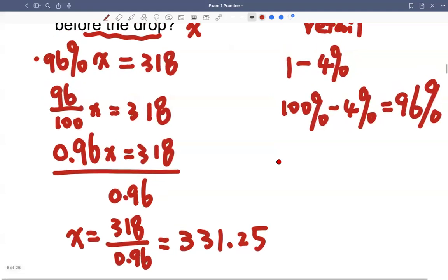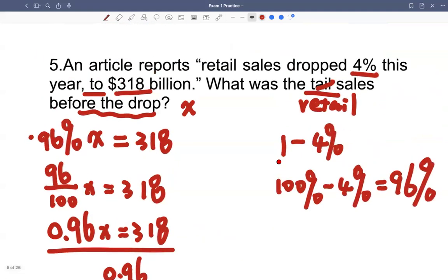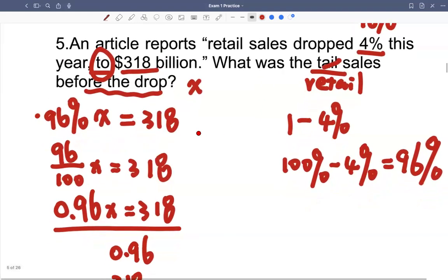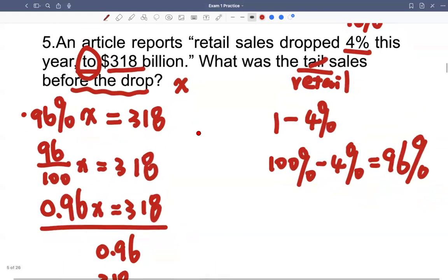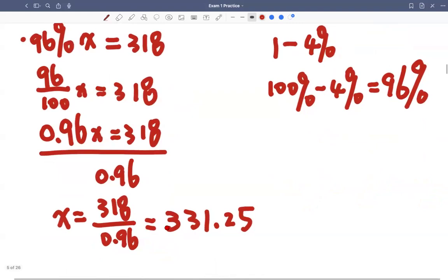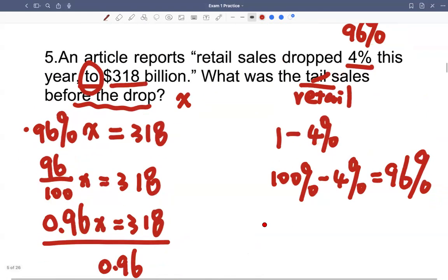So let's go back to make sense of this. Retail sales dropped 4%, so dropped 4%, that means it still has 96%. And this is the key word, 318. So it means the retail sales is 318 billion. So that's why it's more, because the 4% has been dropped. So you get 331.25 billion. That's for question 5.